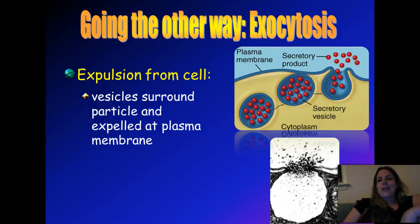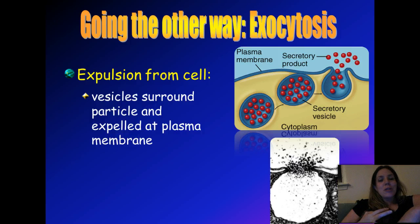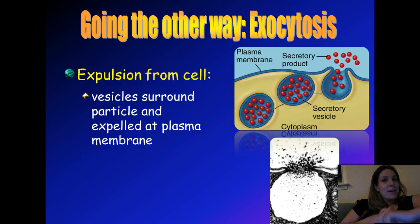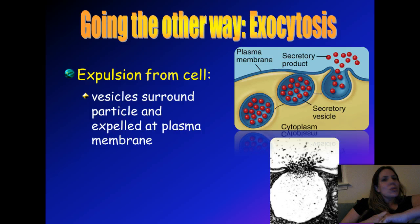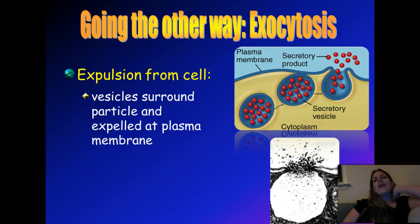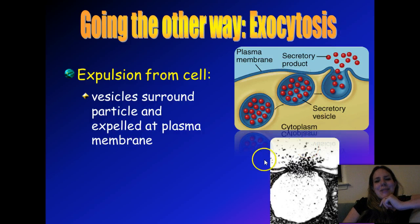To summarize: diffusion and osmosis, passive transport also called facilitated diffusion, active transport which requires ATP because you're going against the concentration gradient, and endocytosis which includes phagocytosis and pinocytosis, and exocytosis. Hope this helps, and I'll see you guys soon.